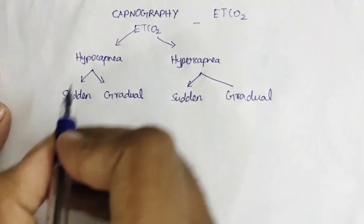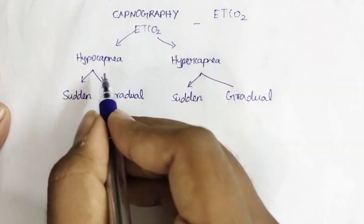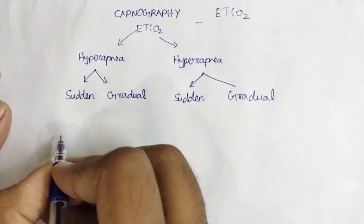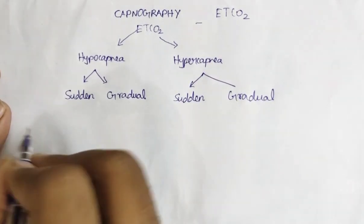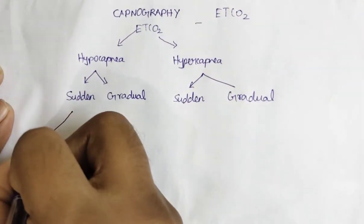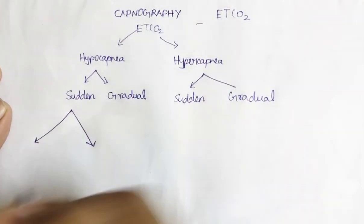If there is hypocapnia occurring suddenly, there are two possibilities: it can be decreased or it can become zero. Let's draw the diagram first.